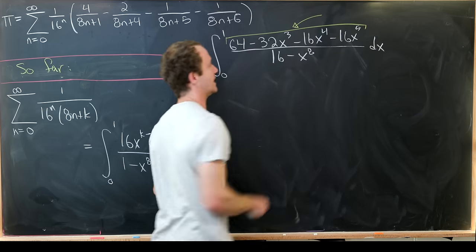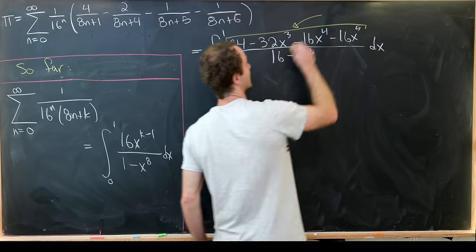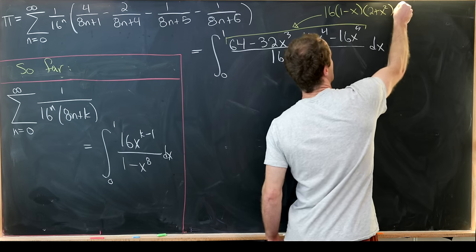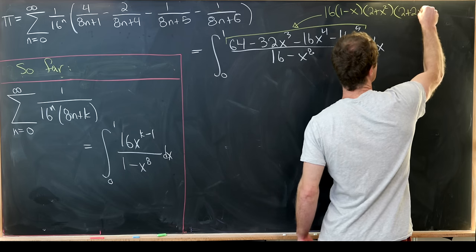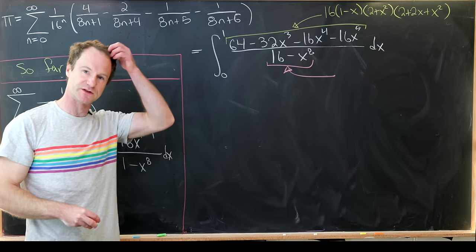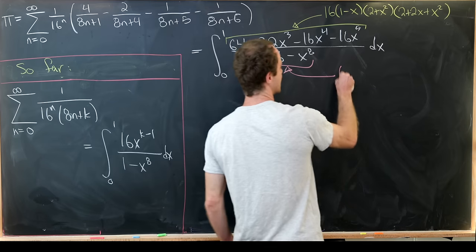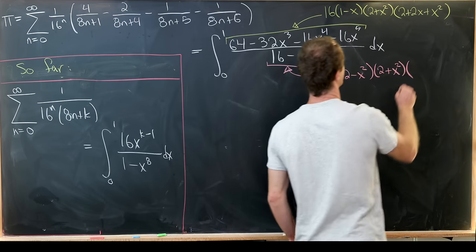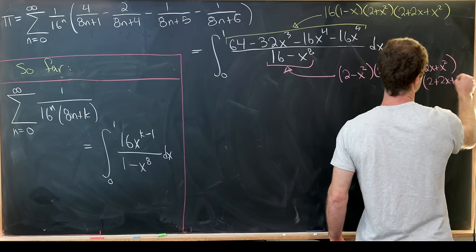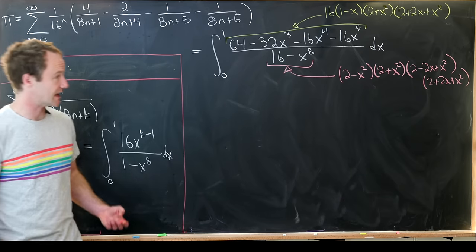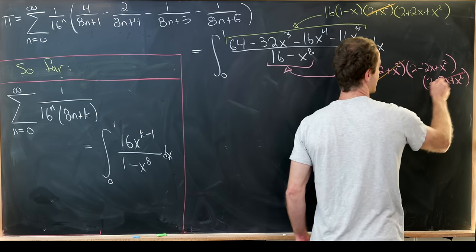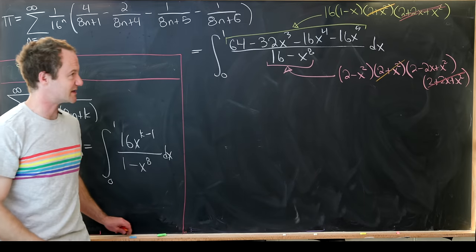This is a little bit of a tricky part, but if you play with it a bit, you can find the factorization. The numerator factors as 16 times 1 minus x times 2 plus x squared times 2 plus 2x plus x squared. For the denominator, you can repeatedly factor using a difference of squares to get 2 minus x squared times 2 plus x squared times 2 minus 2x plus x squared times 2 plus 2x plus x squared. The 2 plus x squared terms cancel, and the 2 plus 2x plus x squared terms cancel.